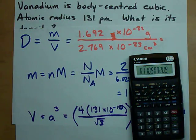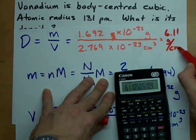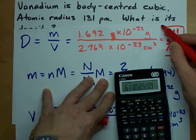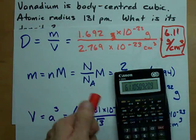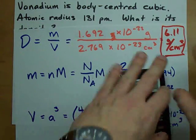6.11 grams per centimeter cubed. Seems like a typical value. It's usually going to be between, I don't know, 1 and 10. I just made those numbers up, but you know, it's a low number.